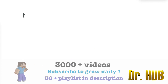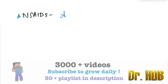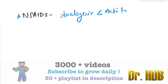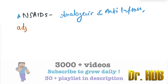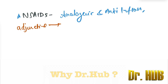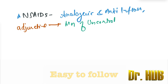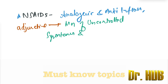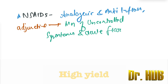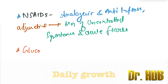To begin with, the first important drug class is NSAIDs. NSAIDs are analgesics and anti-inflammatory agents. They are used as an adjunctive for the management of uncontrolled symptoms and in acute flares.